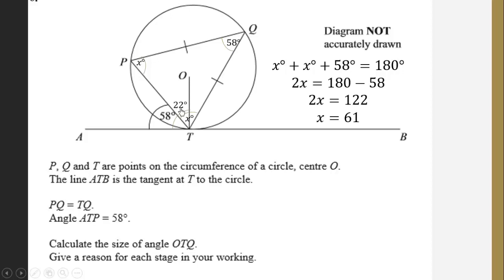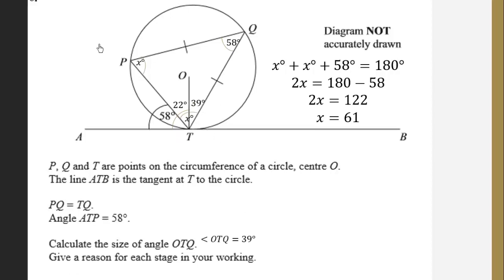The whole angle at T is 61 degrees, and we know the tangent and radius make 90 degrees. Taking 90 minus 58 gives 22 degrees for one part, then 61 minus 22 gives 39 degrees. Hence angle OTQ is equal to 39 degrees. Remember to recall the theorems and don't let the diagram scare you — go bit by bit. When there's a tangent, check whether you can use the alternate segment theorem or the perpendicular theorem where the tangent makes 90 degrees with the radius. Don't forget to subscribe to the channel.